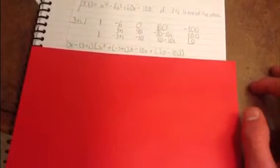Then, since 3 + i is one of the zeros, you know that by the conjugate rule that 3 - i is also one of the zeros. So the next step is to divide the quotient by 3 - i.